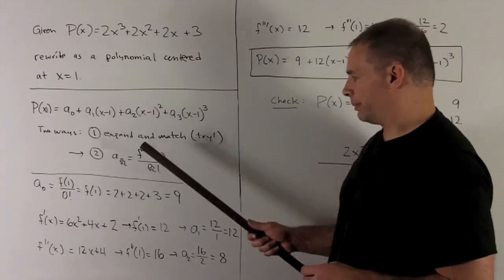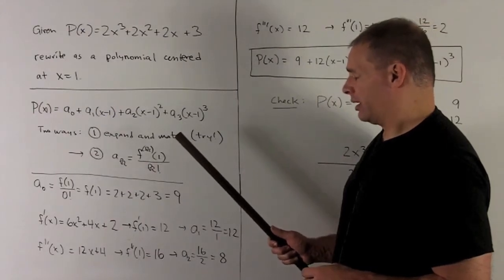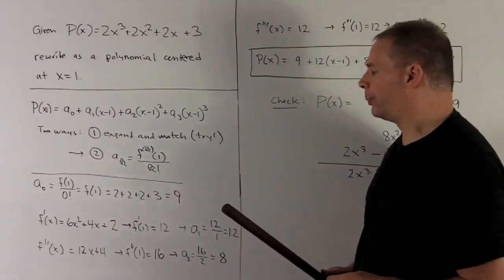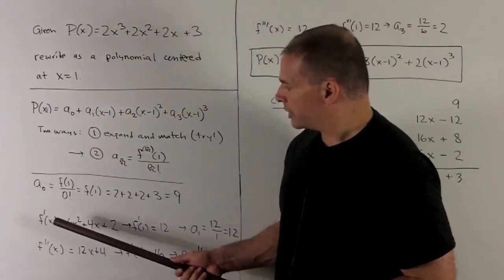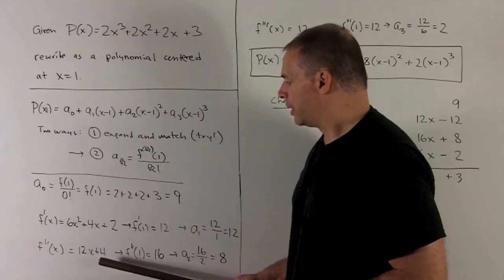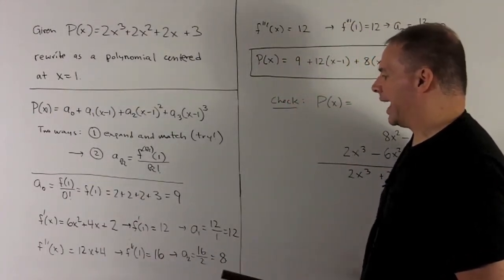For our second a, a₂, we're going to take the second derivative, take that at 1, and then divide by 2 factorial, which is 2. So second derivative is 12x + 4. We evaluate at 1, which gives me 16. I divide by 2, and that gives me a₂ = 8.